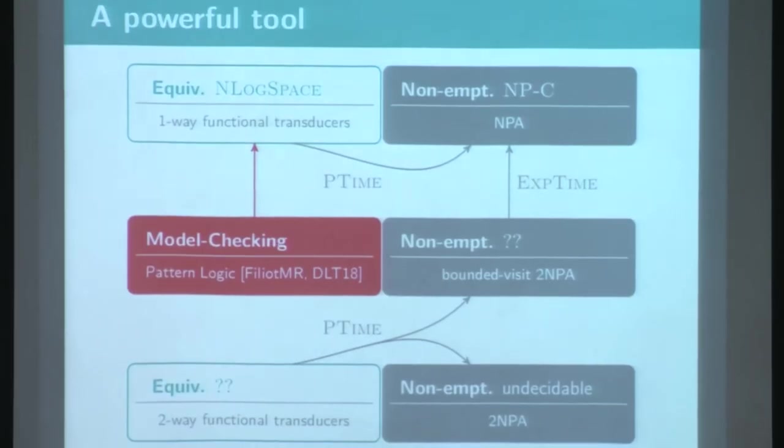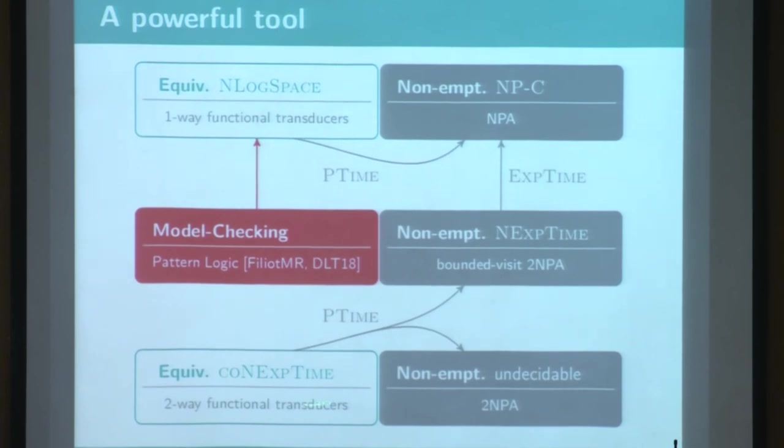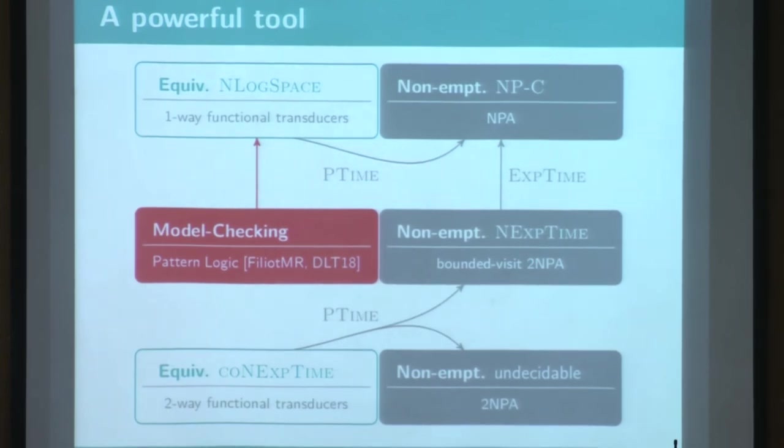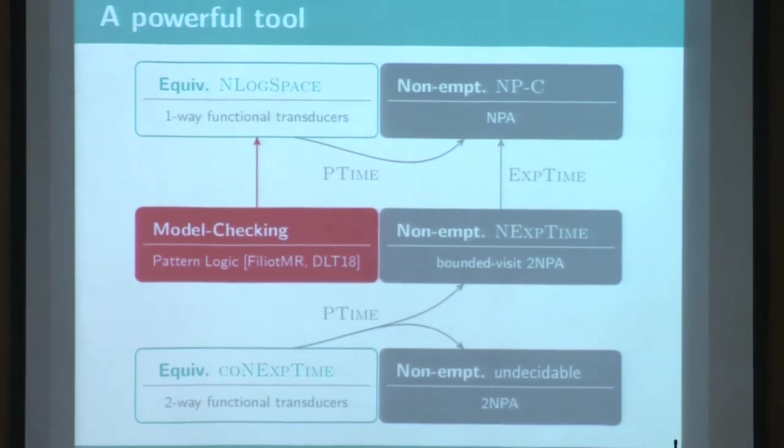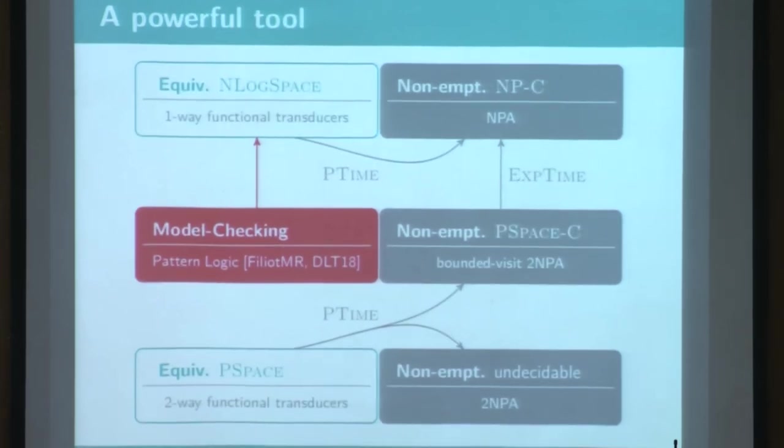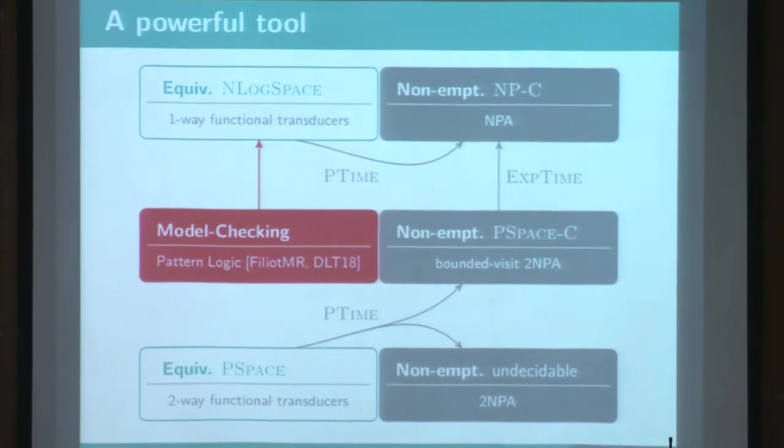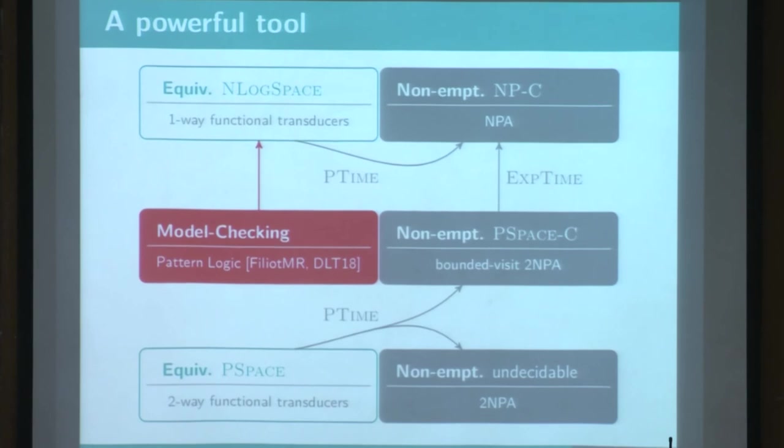So then this construction provides us those exponential time connections, and then that provides us this co-NEXPTIME membership. But in fact, we indeed have an exponential blow up there, but it's only due to the size of those blocks, and the size of the block depends on the number of states. And by using some traditional techniques, we can compute this result on the fly, and then obtain those PSPACE results, and it's even PSPACE complete, and that provides us those PSPACE membership.